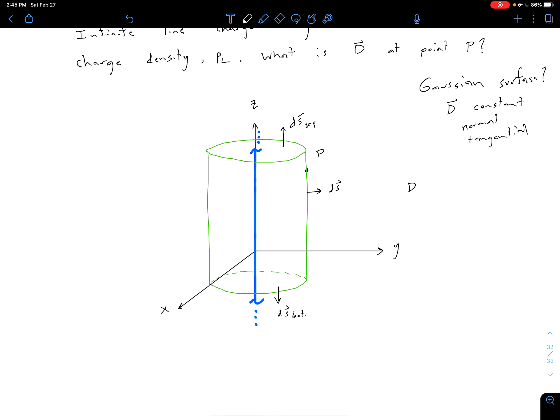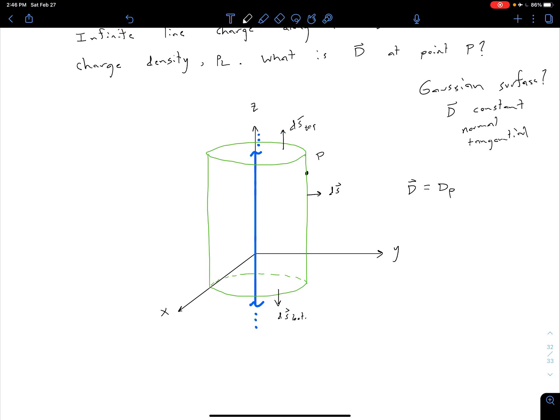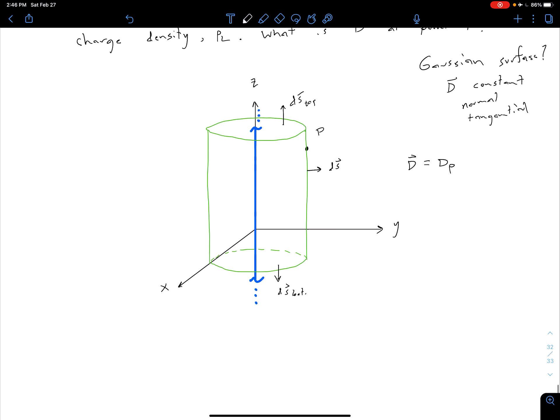Now remember, we said our D, based on our qualitative argument, is going to be equal to D rho. So it's only going to have a rho component. And so what that means is for our top and bottom, when we do the dot product of our rho vector with either our positive z vector or our negative z vector, positive or negative unit vector in the z direction, we're going to end up with our flux is 0. So for the top and bottom, we can say that our D dot ds is equal to 0. So then we only really need to consider our sides.